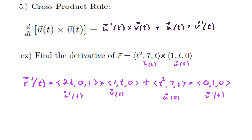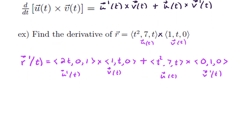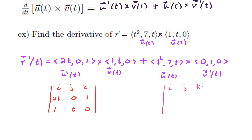Now let's clean this up. For the first cross product, we write the matrix with i, j, k in the top row, (2t, 0, 1) in the second row, and (1, t, 0) in the third row. Separately, the second cross product has i, j, k in the top row, (t², 7t, 1) in the second row, and (0, 1, 0) in the third row. Our final answer will be whatever results from those calculations.